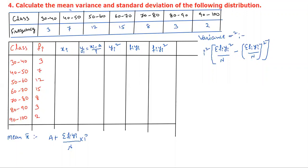We will set up the rows and columns. The mid values are: 45, 55, 65, 75, 85, 95. The class size i = 10. The average of 30 and 40 is 70/2 = 35, so the first mid value check: (30+40)/2 = 35... mid values are 35, 45, 55, 65, 75, 85, 95.